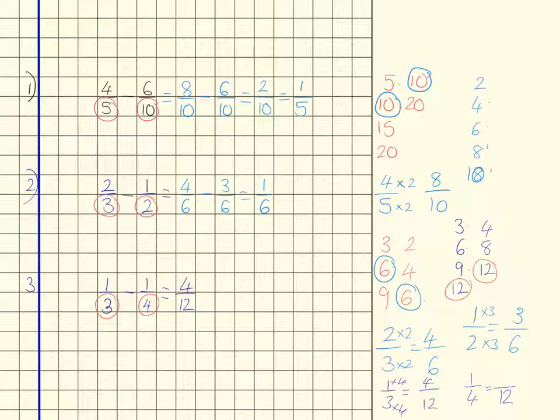So 4 over 12 subtract, let's see, that's times by 3, that's times by 3, so we've got 3 over 12, subtract 3 over 12, which gives us 1 twelfth remaining.